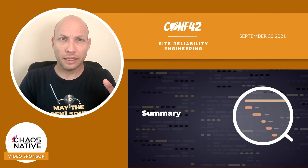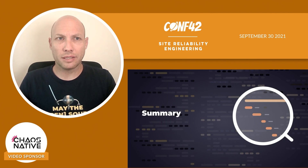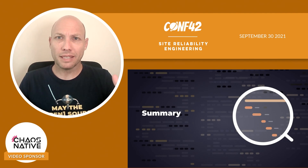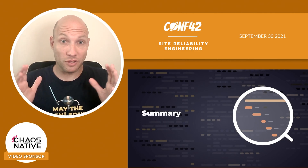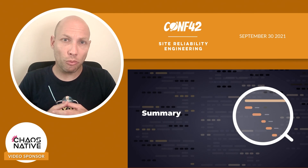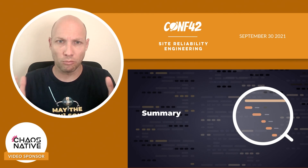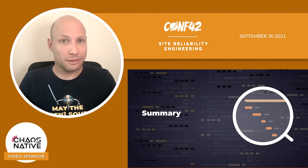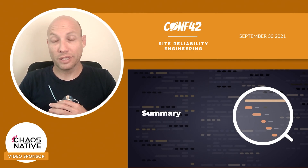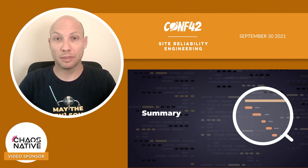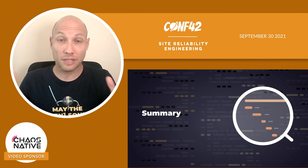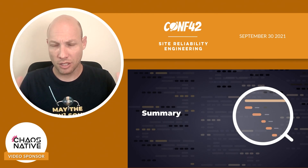To summarize — distributed tracing for us was the missing piece in our puzzle for battling performance issues and for observability in general. If you operate microservices and cloud-native systems, you can more than likely benefit from it too. If you're looking into how to go about it, Jaeger is a great open source option for the tracing analytics backend. For instrumentation, it's highly recommended to go with OpenTelemetry — that's the future-proofed, standard way for instrumentation, not just for tracing but also for logs and metrics.